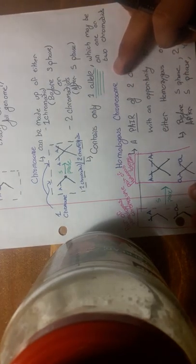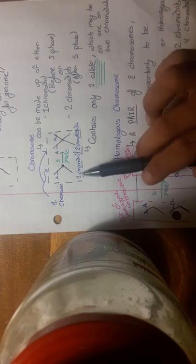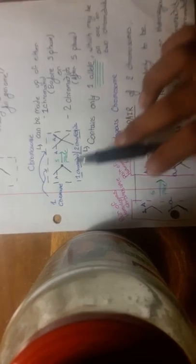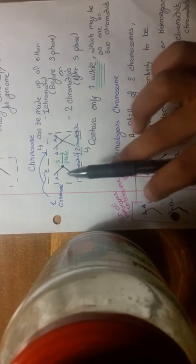So homologous chromosome means a pair of two chromosomes. Again, think about a chromosome that it can be one chromatid or two chromatids, but it's an organization of information. I hope that makes sense.